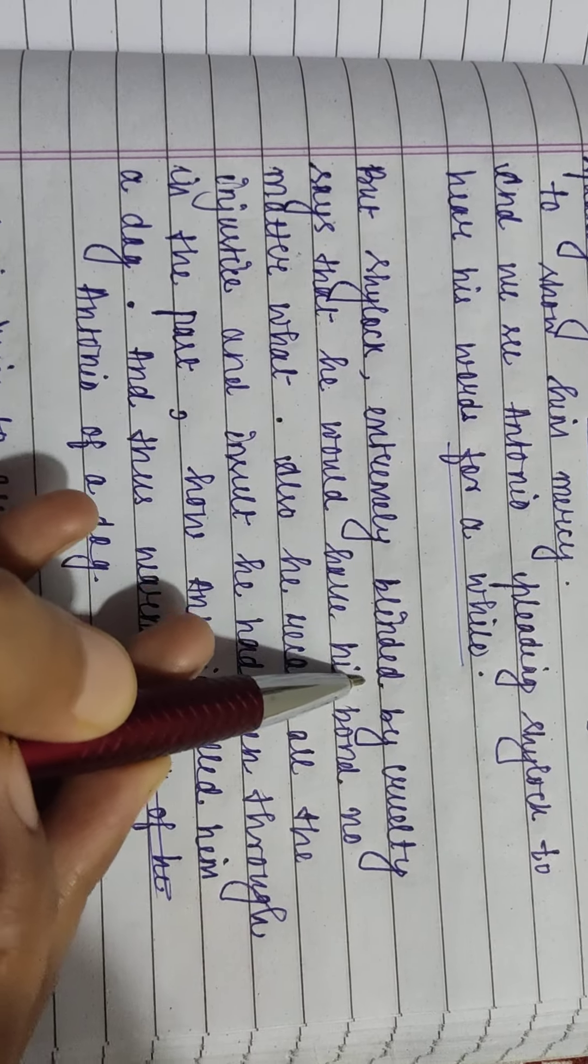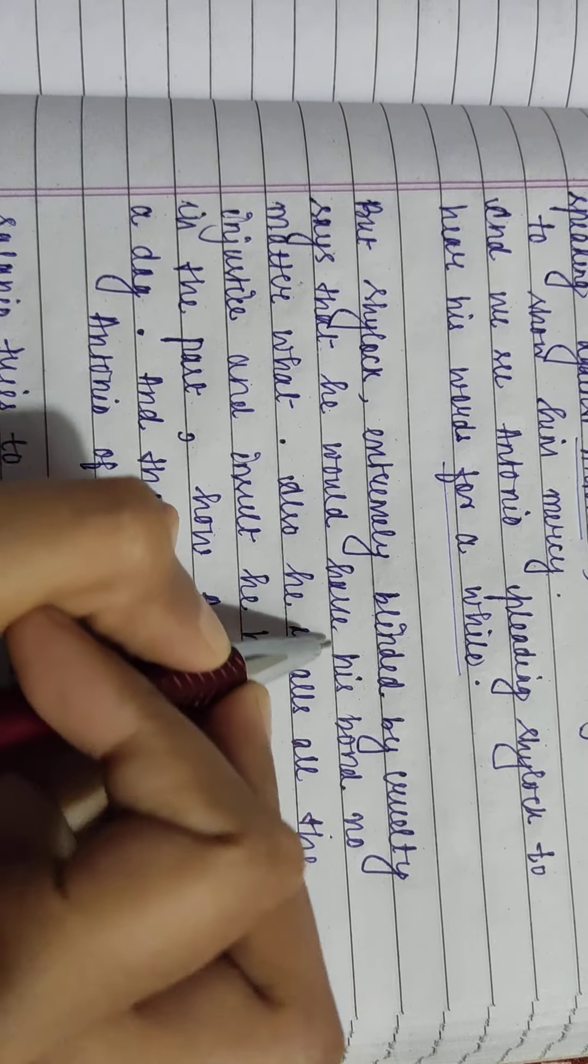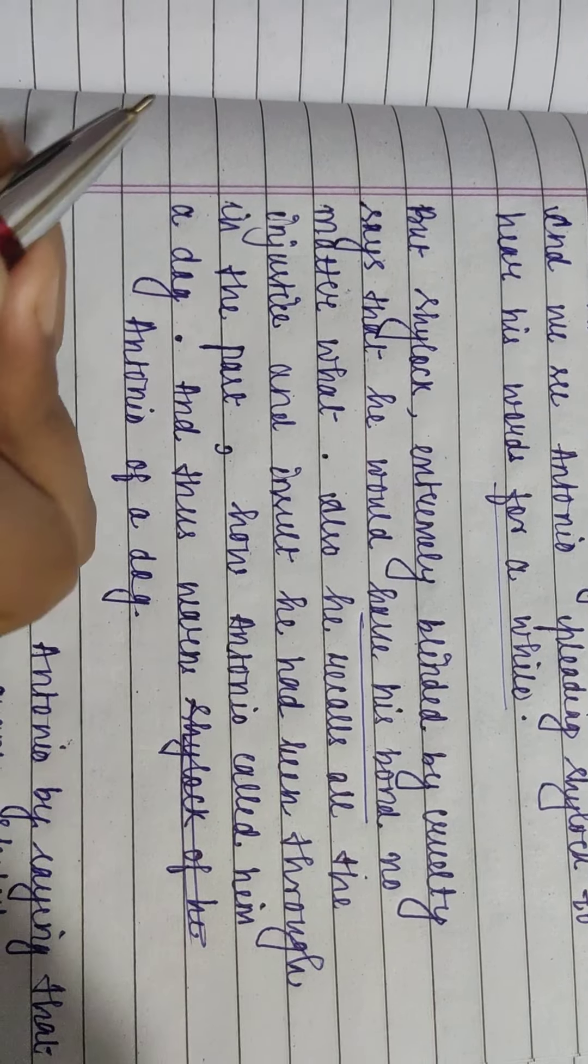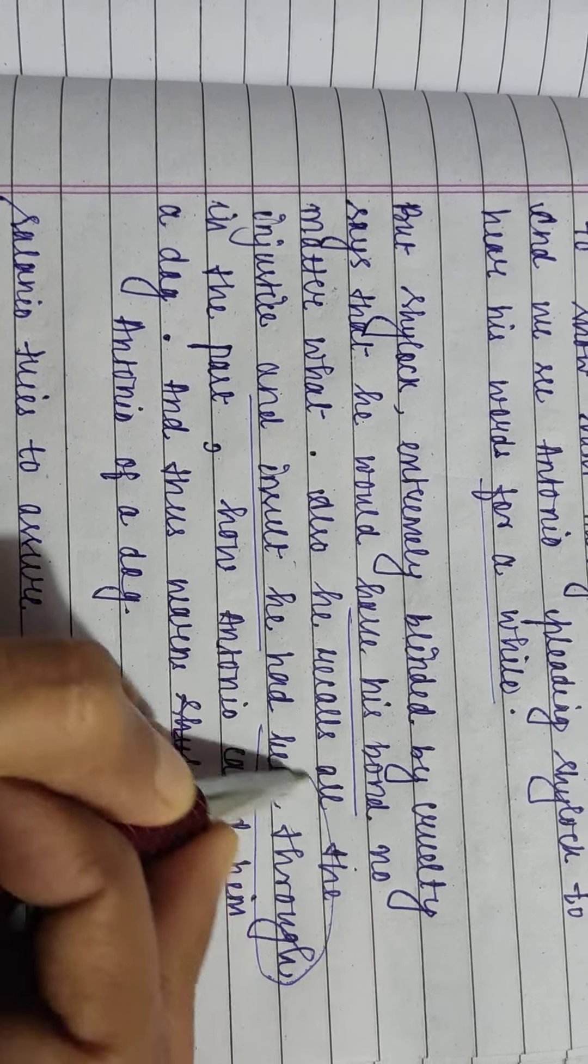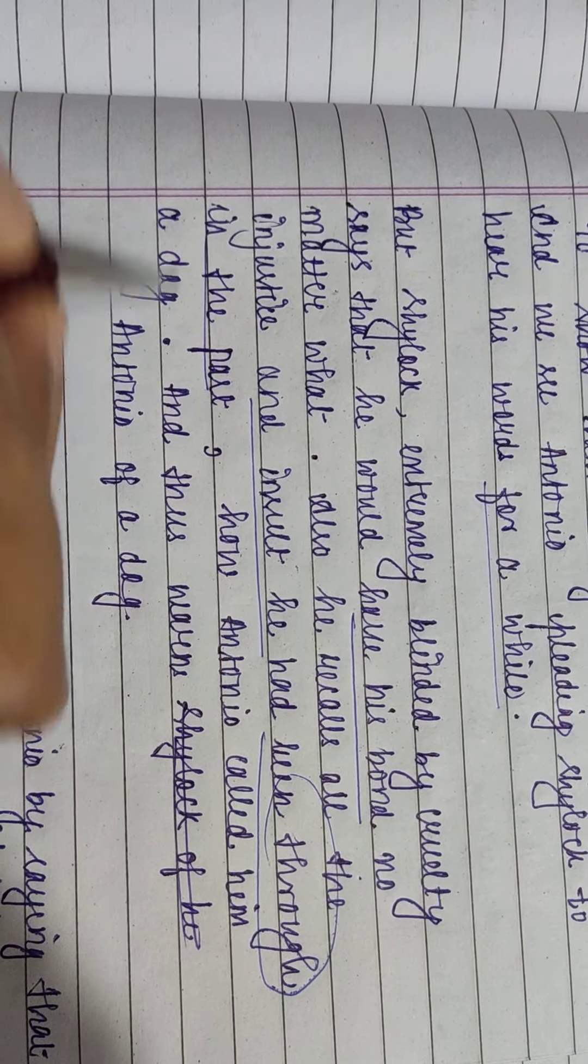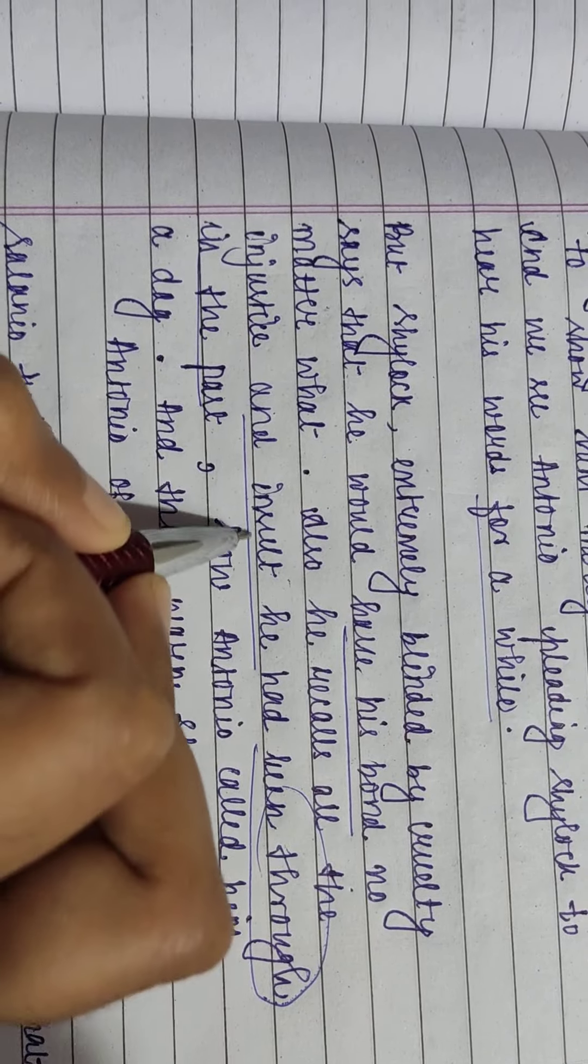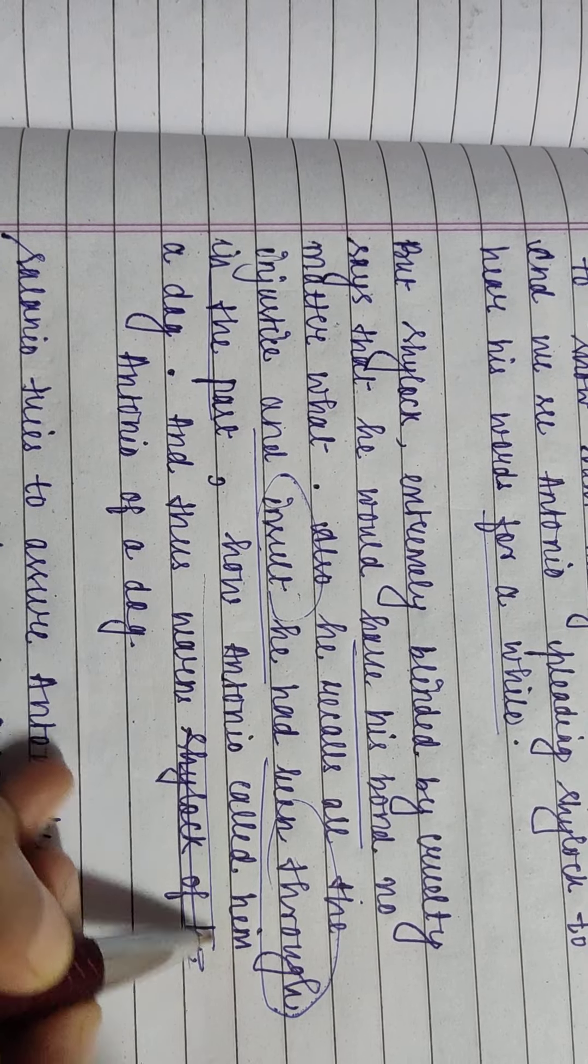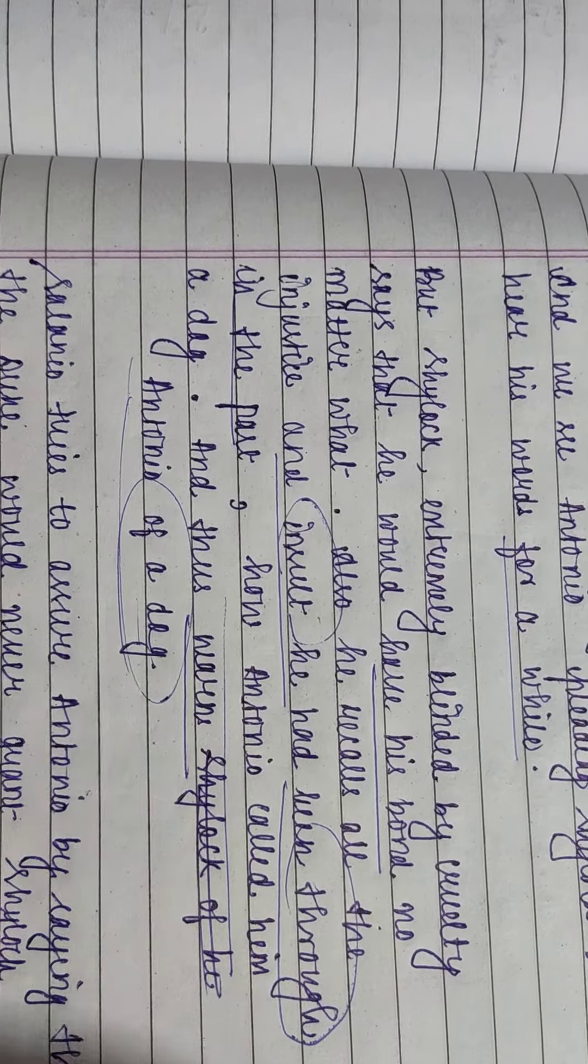But Shylock, extremely blinded by cruelty, says that he would have his bond no matter what because he was also very sure that Antonio would not be able to pay back the debt on time. Also he recalls all the injustice and insult he had been through in the past. In previous scenes we have seen that Antonio had insulted Shylock in the ventures and called him a dog, and thus Shylock warns Antonio to be aware of a dog.